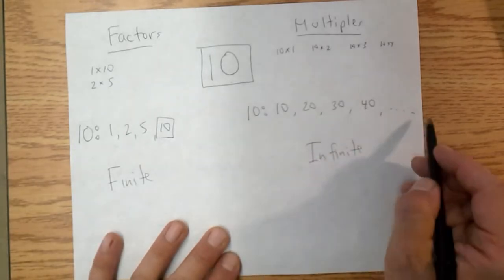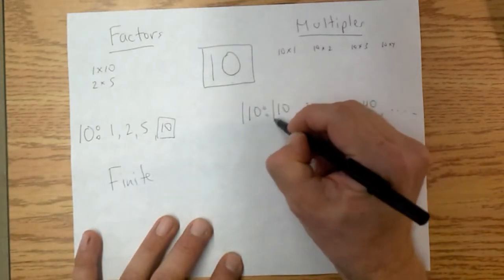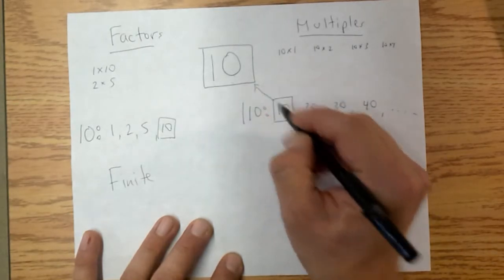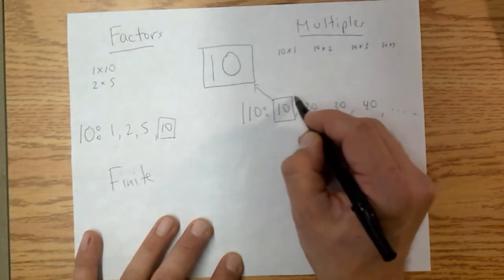Infinite list. We can go on forever. But notice, again with multiples, the first multiple is the number itself. And we start at that number and then we get bigger.